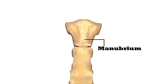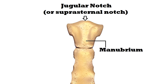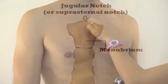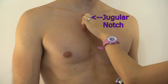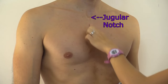The manubrium is the quadrangular-shaped area located at the superior or upper portion of the sternum, and this part resembles the knot part of a necktie. There are some important landmarks on the manubrium. If you look at the superior border, you'll notice a notched area which is called the jugular notch or the suprasternal notch. This notch is actually visible on the neck and it can be palpated and used as a landmark.